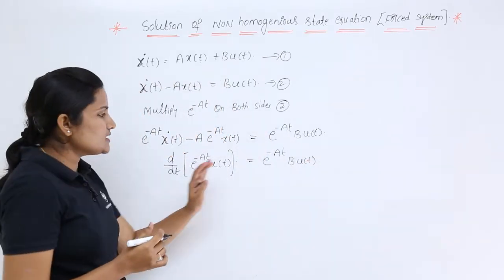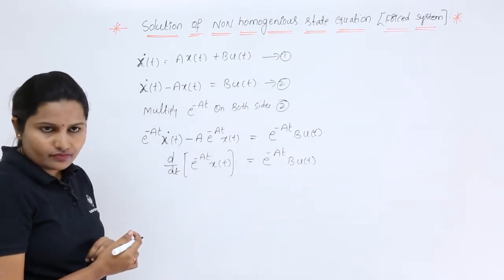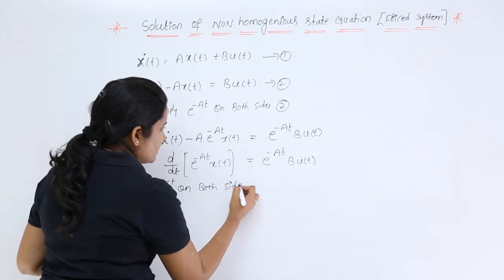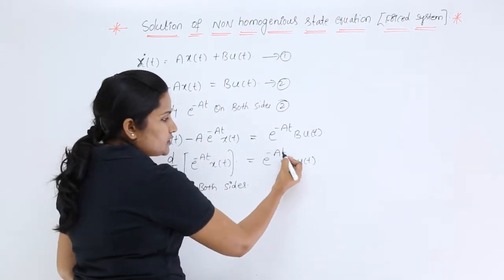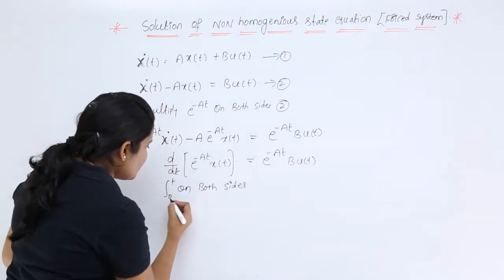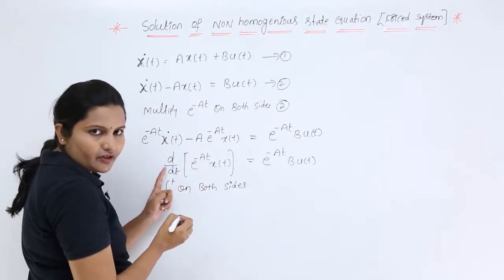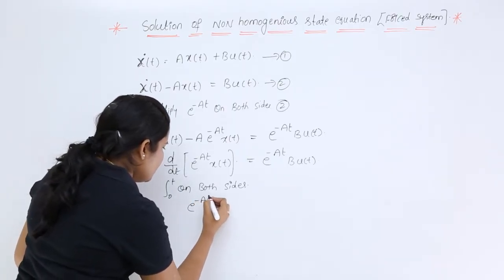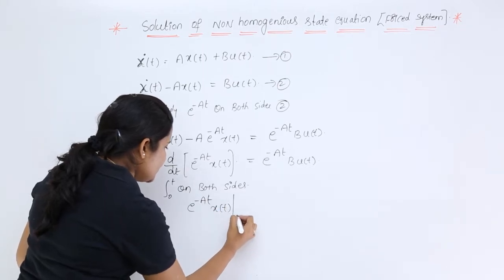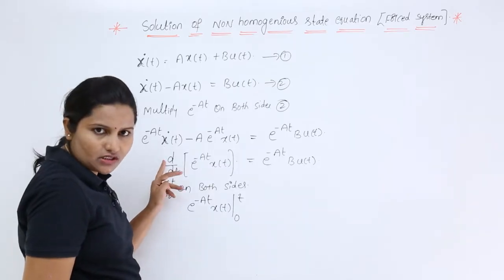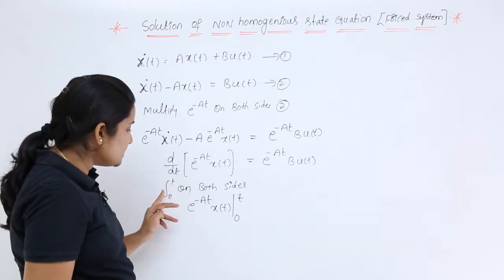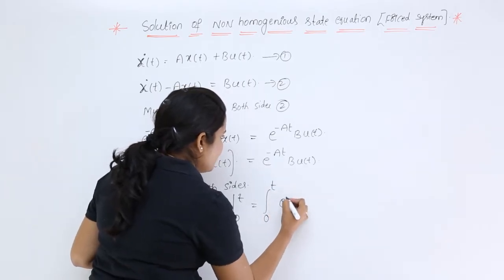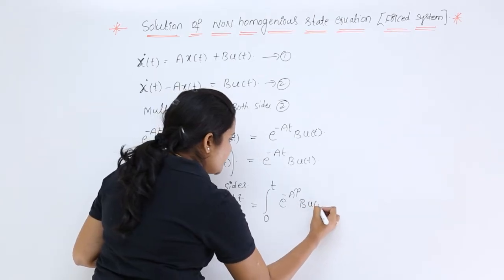Integrating both sides from 0 to t — with the integration variable renamed to τ to distinguish it from the upper limit — the differentiation and integration on the left cancel, leaving only the limits applied to e^(−Aτ)·x(τ). The right side becomes the integral from 0 to t of e^(−Aτ)·B·u(τ) dτ.